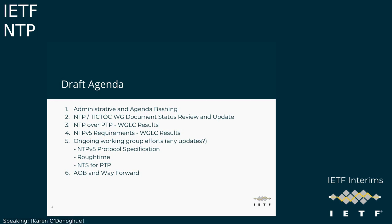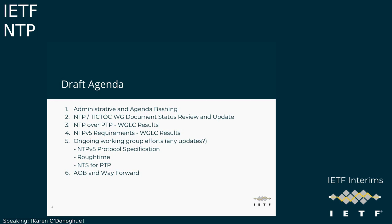We have three additional work items. We're not that far from the meeting we had at the beginning of November, almost five weeks ago. Miroslav, do you have any updates on the NTP v5 protocol spec? No real update — there was just one change in the Git repository. I'd like to remind people to please comment on this document on the mailing list. Do we have any updates on Roughtime?